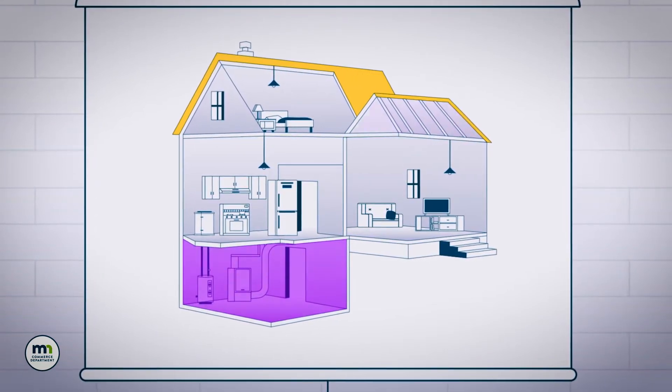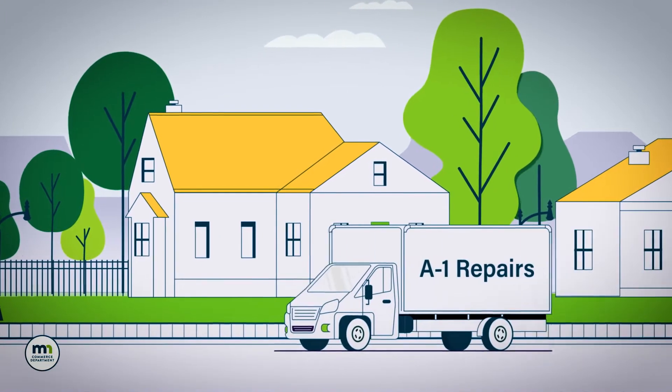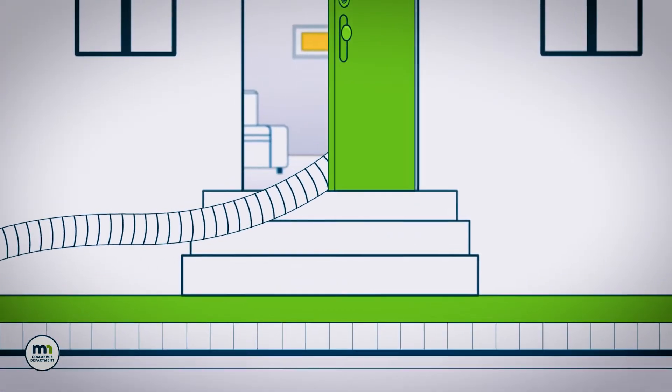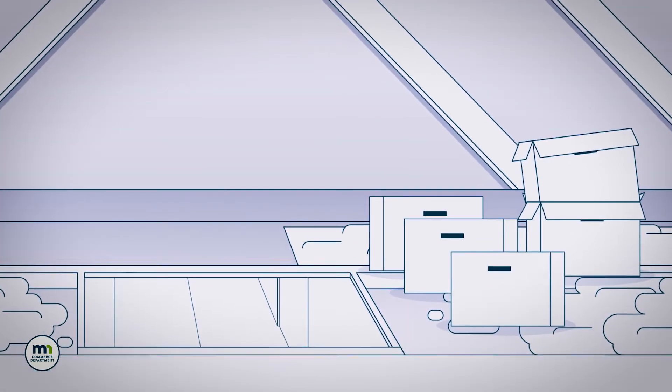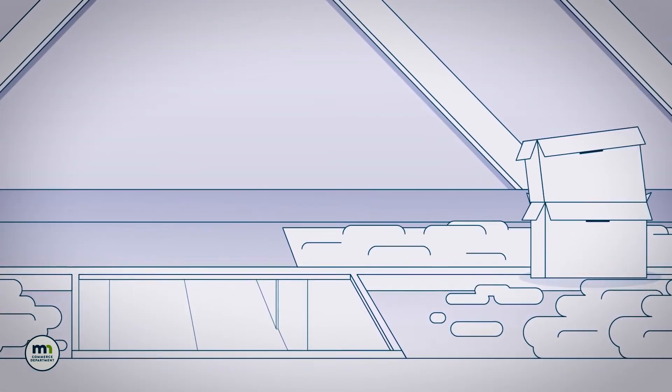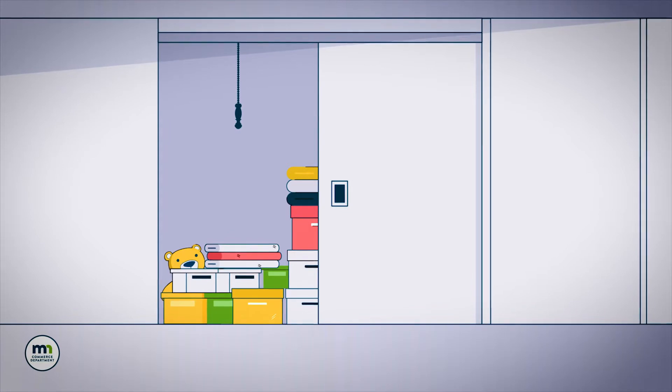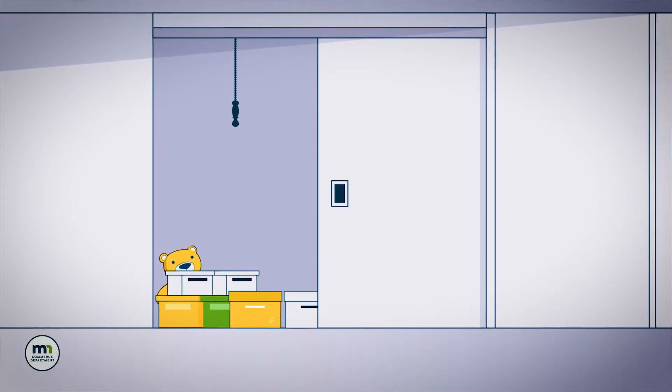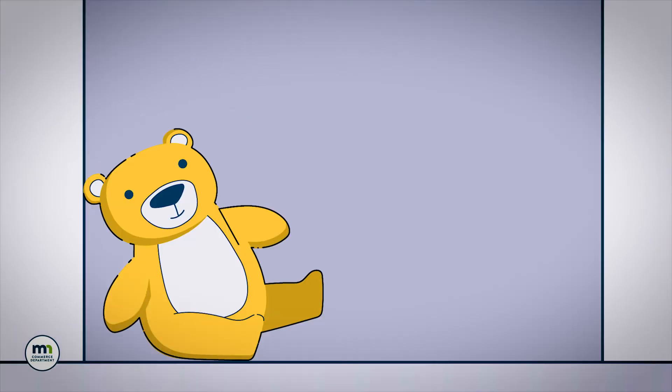Let's start with the attic. To add insulation to your attic, the contractor will need a clear path from your home entrance into the attic. You'll need to remove boxes or other items that might be stored in the attic. If the attic hatch is located in a closet, you'll need to empty that closet completely.